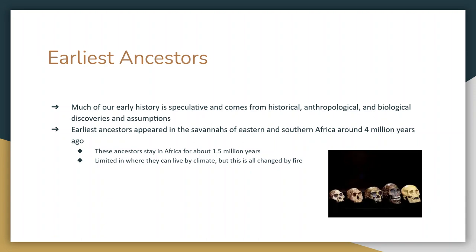It looks like our earliest ancestors appeared on the savannas — the grasslands, if you will — of eastern and southern Africa somewhere around four million years ago. According to the fossil record, our earliest ancestors are going to stay there until about one and a half million years ago. They're limited to where they can live because of the climate. They can't move where it's too hot or too cold. Fire is going to be the big change because fire is going to allow our earliest ancestors to move to places that are colder.